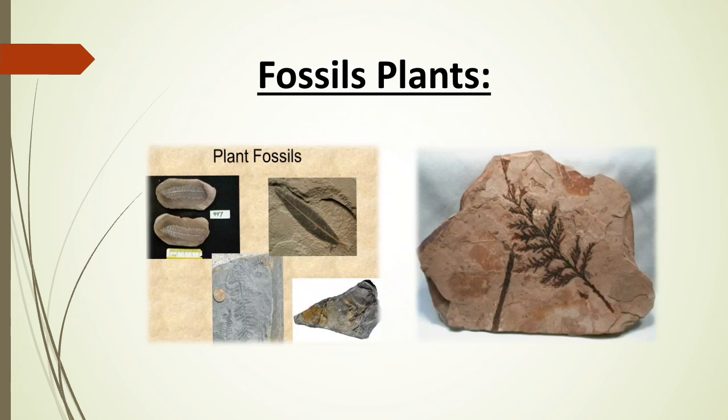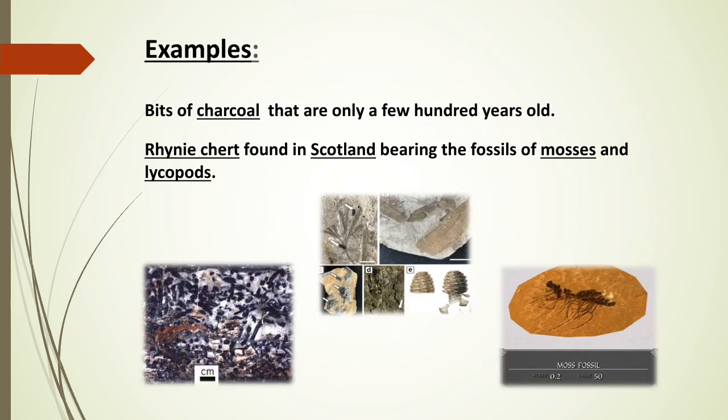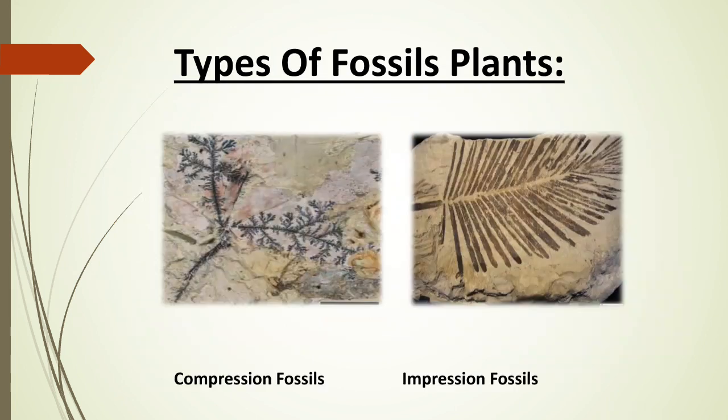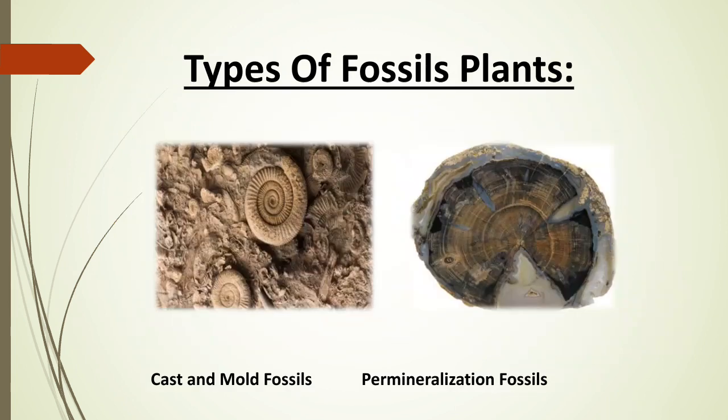Fossil plants and their diagram examples include charcoal, mosses, dinosaur remains, and some other examples you can see here in diagrams. The types of fossil plants are: compression, impression, cast and mold, mineralization, compaction, and molecular fossils, as shown in the diagrams with examples.